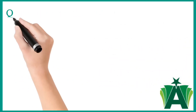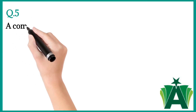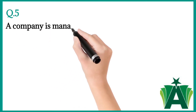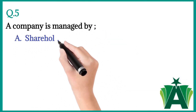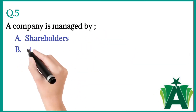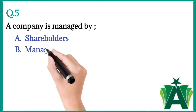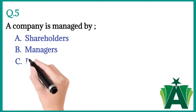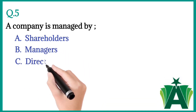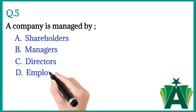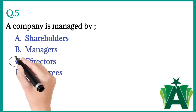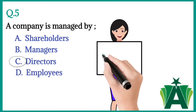Question number five: A company is managed by — a) Shareholders, b) Managers, c) Directors, d) Employees. The correct answer is c) Directors.